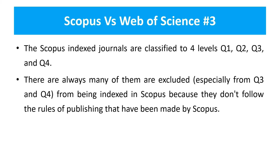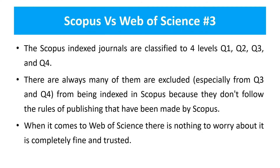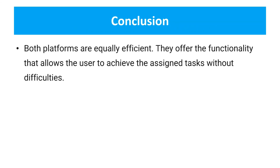Scopus has a daily updating frequency, whereas Web of Science updates weekly or monthly. So it is possible that your selected journal may be indexed right now but excluded in the next couple of months. With Web of Science there is nothing to worry about in that regard — it is completely trusted. The indexing process for WoS is hard and the review process is very rigorous, so once a journal is indexed in Web of Science it will remain there. It is more trustworthy compared to Scopus.